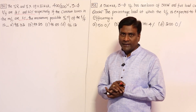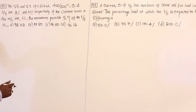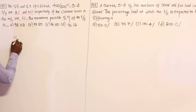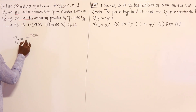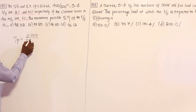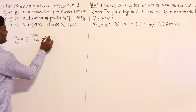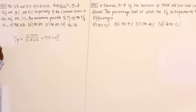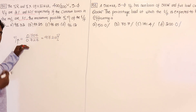So the answer is 0.707 divided by 0.727, giving maximum efficiency of 97.25 percent. Now let me explain how I got this.